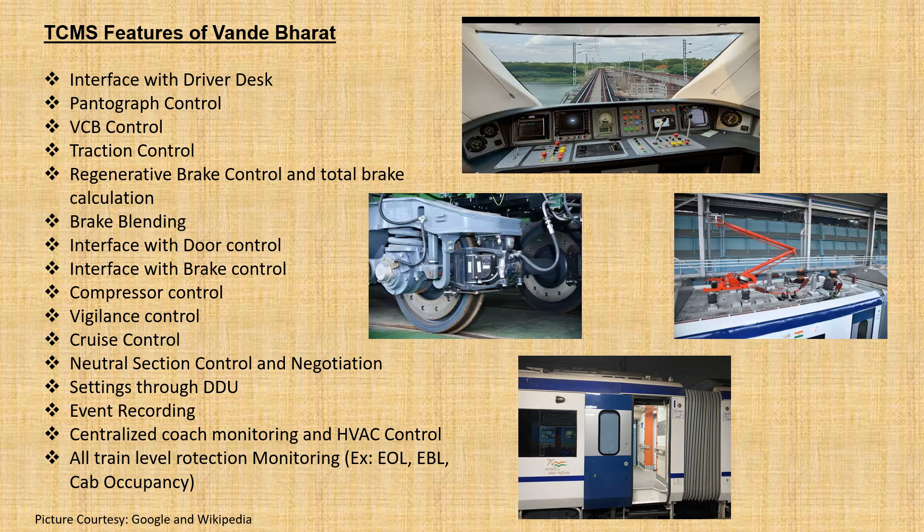As TCMS connects all the subsystems together, some of the main features of TCMS are: interfacing with driver desk, traction control, regenerative brake control, brake blending, interfacing with door control, interfacing with brake control, vigilance control, cruise control, neutral section negotiation with multiple pantographs, event recording, centralized coach monitoring and HVAC control, and all train level protection monitoring.